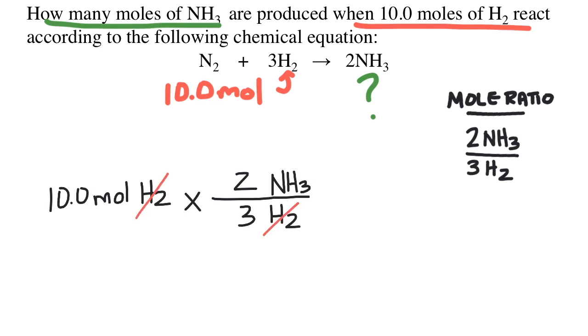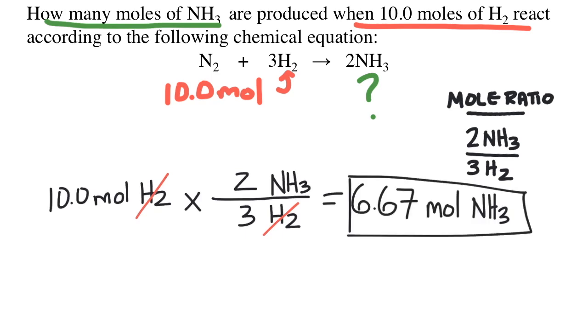So it becomes 10 times 2, divide by 3, and we get an answer of 6.67 moles of ammonia.